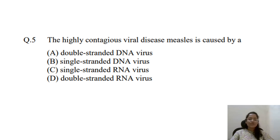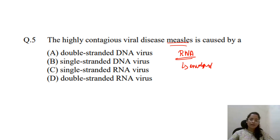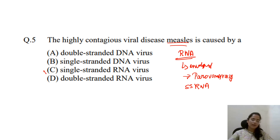The next question: the highly contagious viral disease measles is caused by — measles is an RNA virus. It is an enveloped RNA virus that comes under the category of Paramyxovirus, and it is a single-stranded RNA virus. So the answer is single-stranded RNA virus.